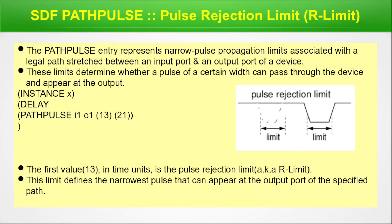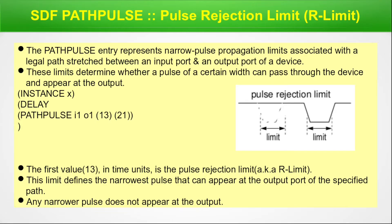This limit defines the narrowest pulse that can appear at the output port of the specified path. Any narrower pulse does not appear at the output. So if the pulse width is less than 13, it is rejected. That is the pulse rejection limit, and we can set it in the SDF file.